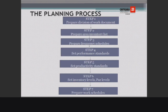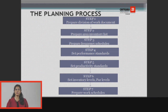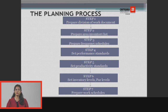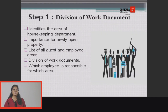The planning process has seven steps: Step 1 — prepare a division of work document; Step 2 — prepare an area inventory list; Step 3 — prepare a frequency schedule; Step 4 — set performance standards; Step 5 — set productivity standards; Step 6 — set inventory levels; and Step 7 — prepare a work schedule.